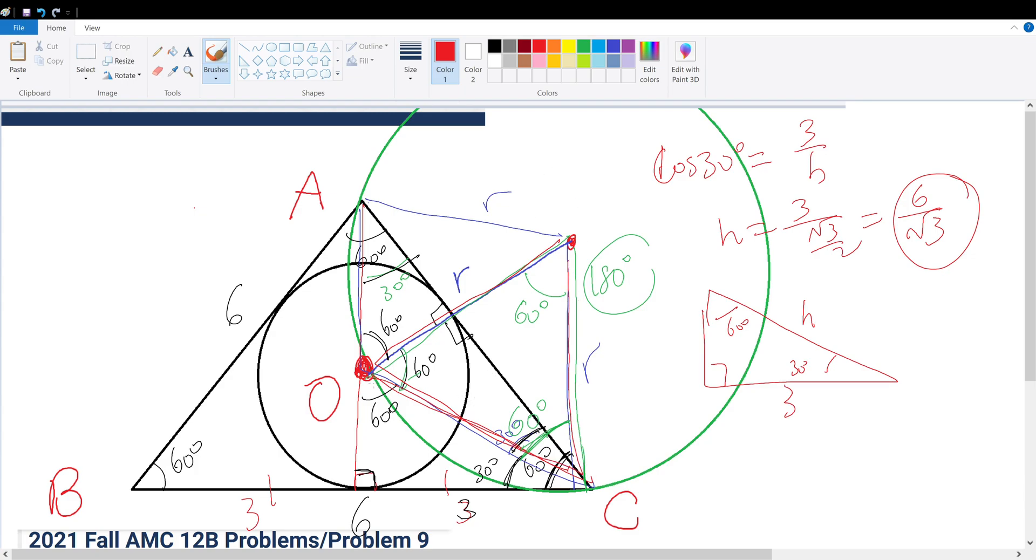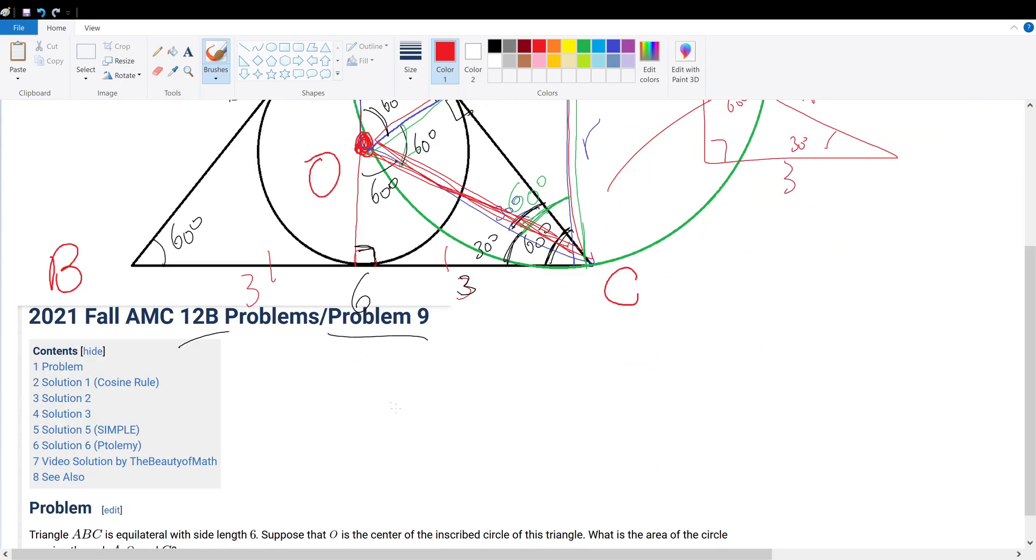Since this is an equilateral triangle and we know the side length of OC, we know R is actually equal to 6 over root 3. So R equals 6 over root 3. Then R squared would be 36 over 3, which is 12.